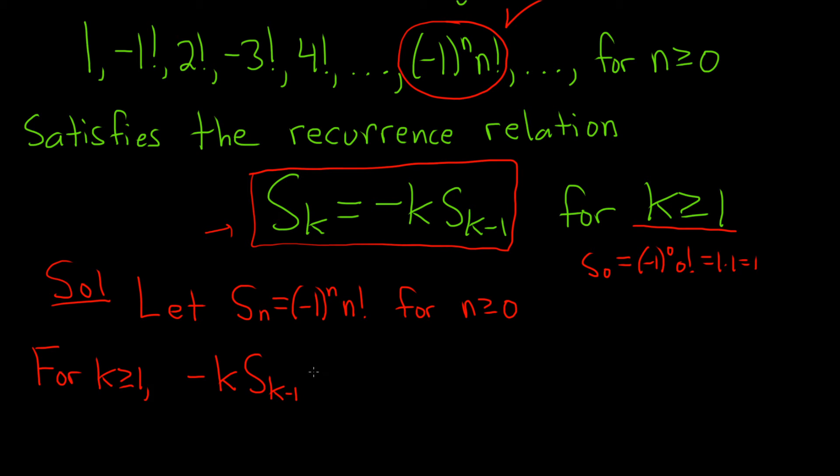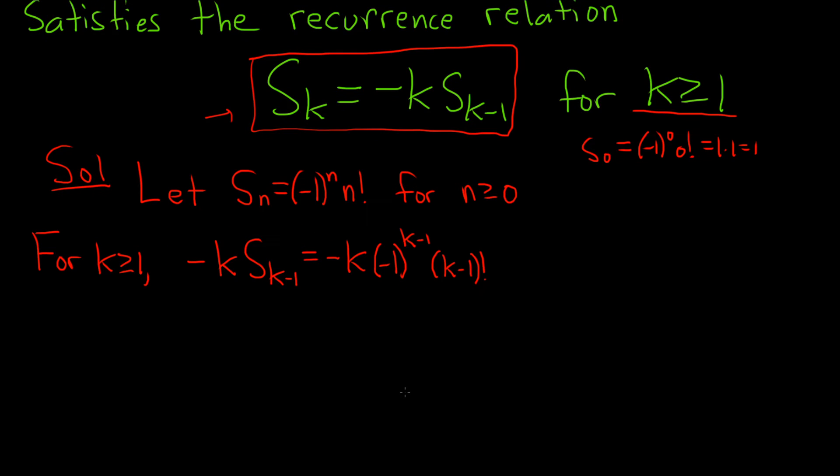The only thing we can do now is actually plug in the formula for our sequence. So this is negative k, and then S sub k minus 1. Well, all we do is replace all of the n's with k minus 1's. So this is negative 1 to the k minus 1, and then the n factorial will become a k minus 1 factorial.